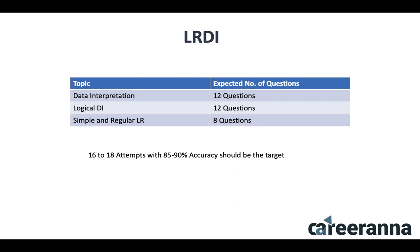Coming to LRDI, I have broadly divided it into three parts. First is Data Interpretation: out of 32 questions, 12 questions will be from DI, comprising topics like tables, line graphs, bar graphs, and pie charts. Second is Logical DI — a hybrid of LR and Data Interpretation — where questions have a paragraph with English description along with data points. Logical DI is ideally the toughest part of your LRDI, needing very strong preparation. There are 12 questions expected from Logical DI.